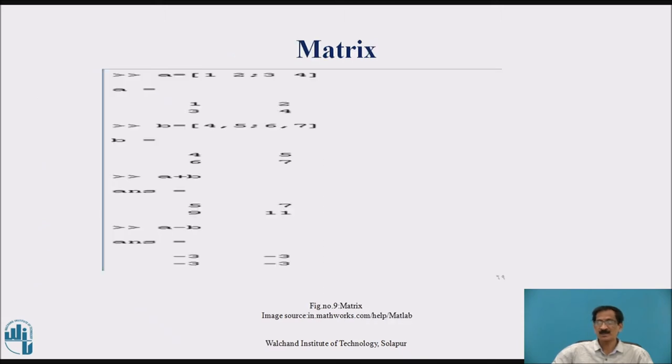This is a matrix having numbers 1, 1, 2 semicolon 3, 4 will give a rectangular matrix of the order of 2 by 2. Then b is equals to 4, 5, 6, 7. After 5 there is a semicolon, so we will get a 2 by 2 matrix. A plus b will add the elements of a with elements of b. Similarly, a minus b will subtract elements of a and b.